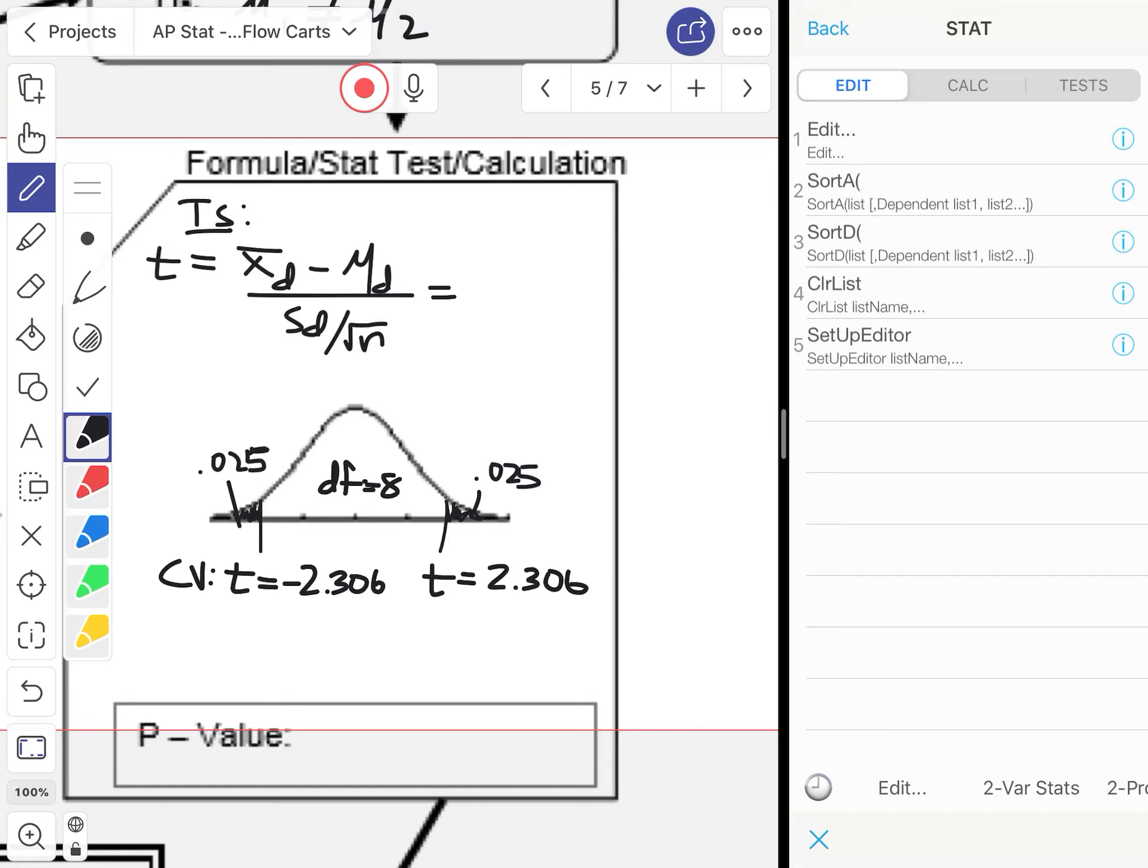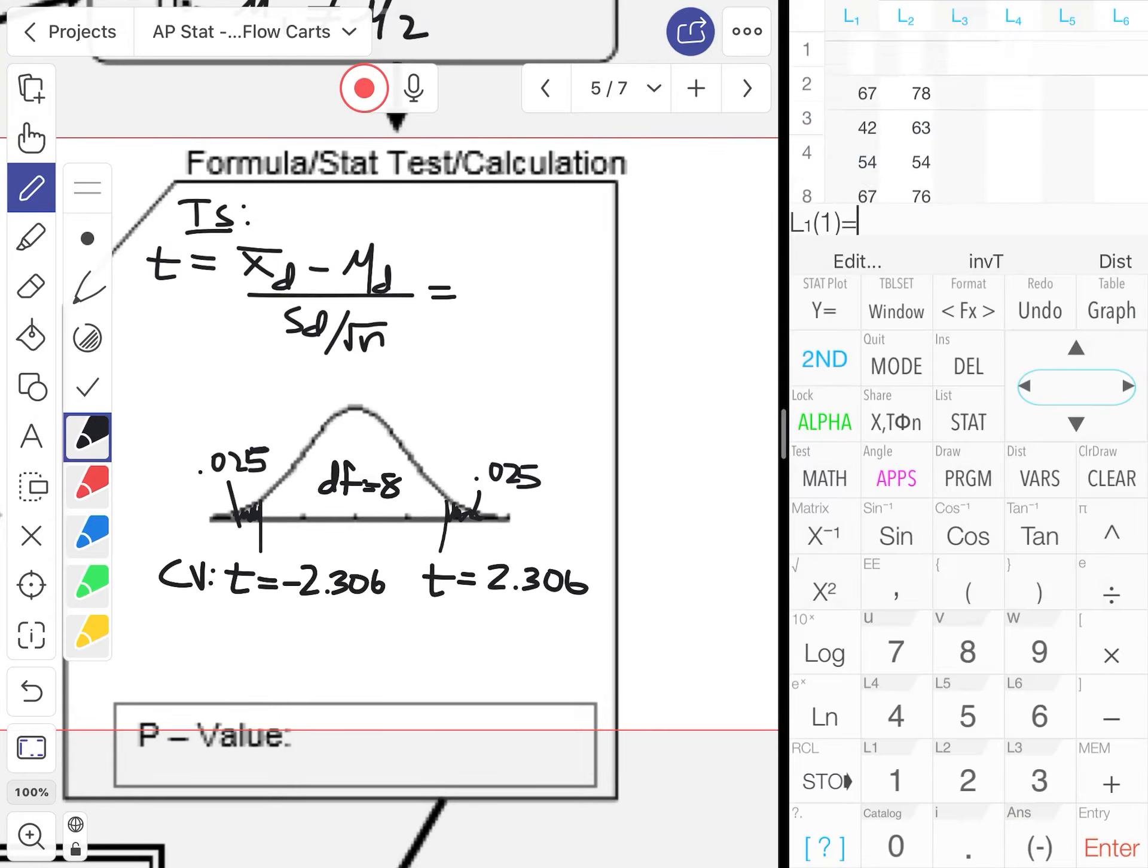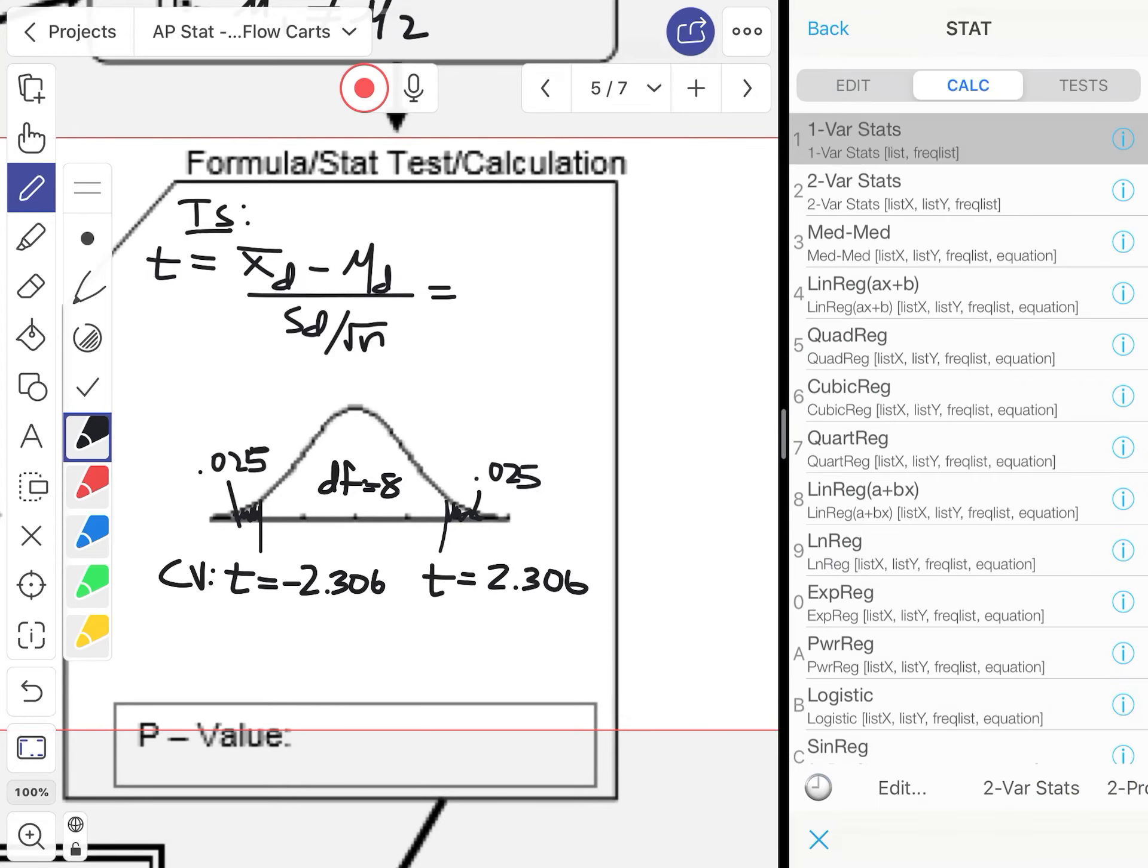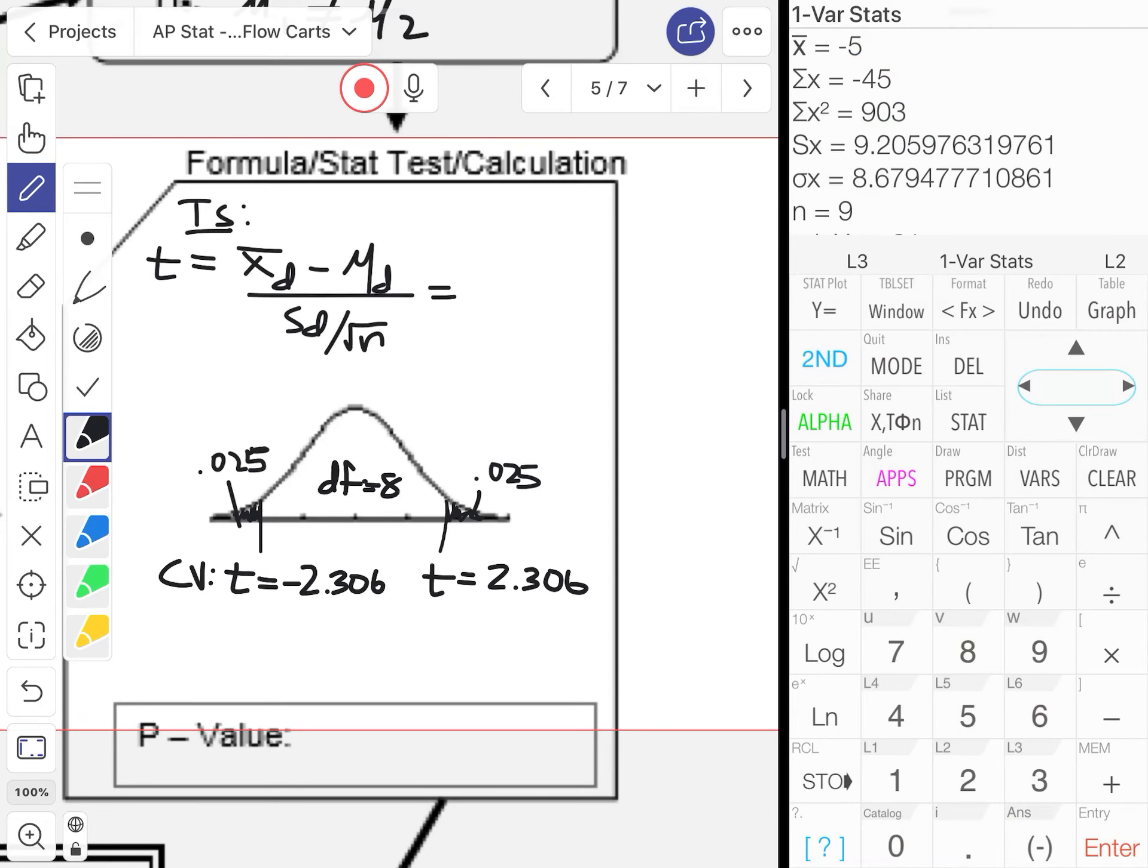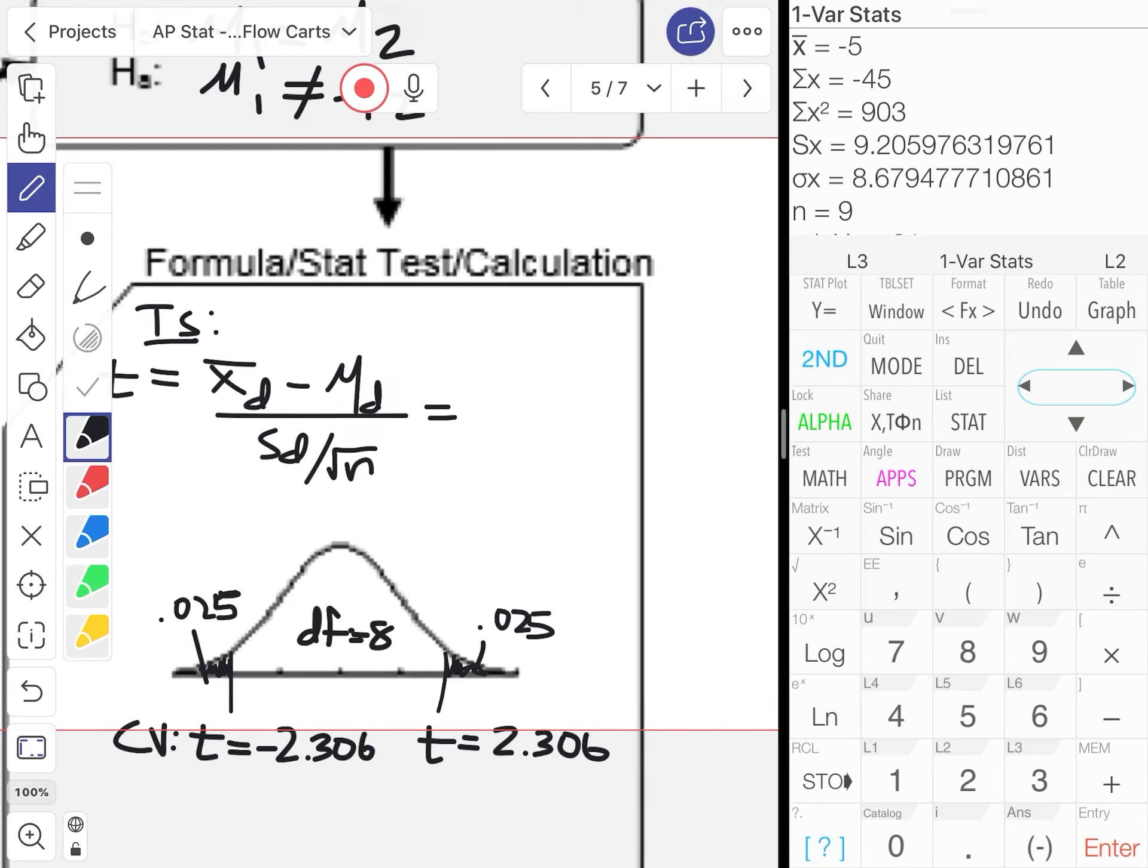And same thing with positive t. So in my L3 I'm gonna do an L1 minus L2. That gives me my mean differences. Then I'm gonna run a one variable stats on L3. It gives me my x̄ which is somehow negative five, which is interesting. μ_d, the assumed difference between the means, should be zero. So s is going to be the 9.206-ish over the square root of nine.